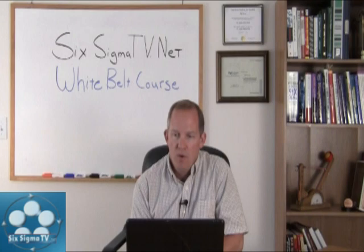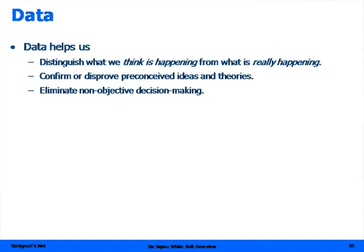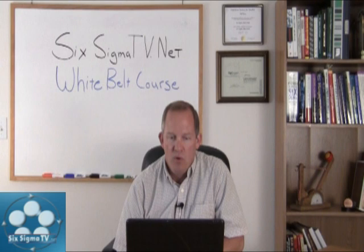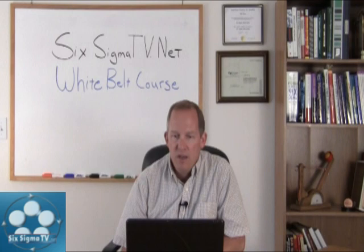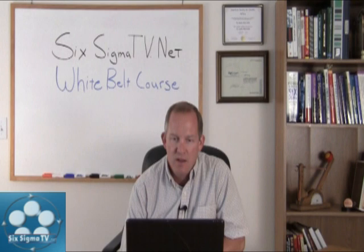What is data? If you can't measure it, you really don't understand what it is that we're looking at. Data helps us distinguish what we think is happening from what really is happening. It helps us confirm or disprove ideas and theories and eliminate non-objective decision making. Data is reliable information upon which we can make decisions. Basically, decisions made on valuable, realistic data always turn out to be better decisions than those based on gut feel.